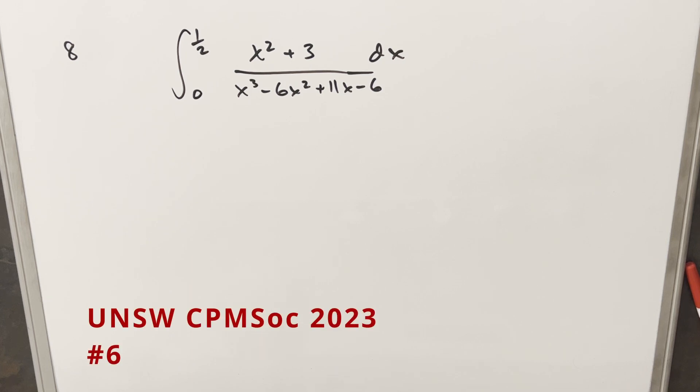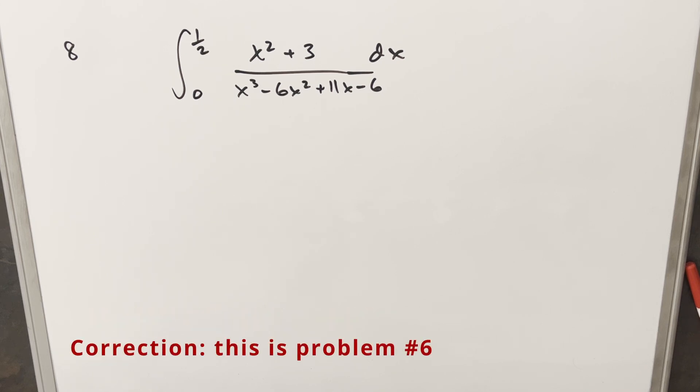Okay, we have here an interesting integral from the UNSW CPMS integration B2023, this one's problem 8. We have the integral from 0 to 1/2 of (x² + 3)/(x³ - 6x² + 11x - 6) dx.